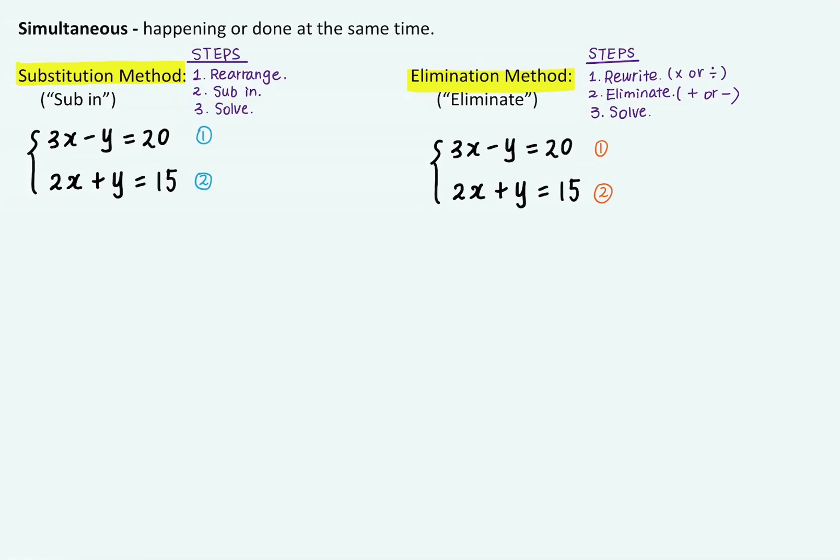A set of simultaneous equations contain two variables, usually x and y. We need to solve the two equations and find x and y values that will make both equations true. An analogy could be that x and y are two keys that can open both doors, equation one and equation two.